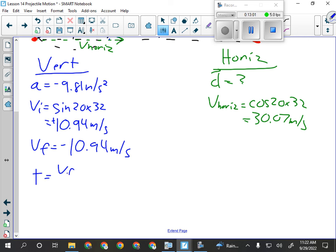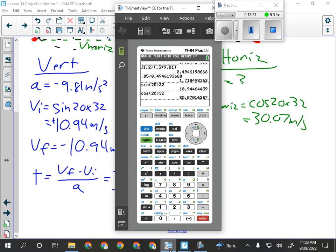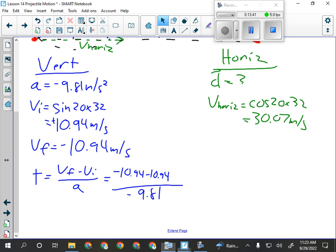So, the time is going to be Vf minus Vi over A, just manipulating our grade 10 science formula. So, that's going to be negative 10.94 minus 10.94 divided by negative 9.81. So, I'm just going to multiply that by 2, and then dividing by 9.81, it's the same deal. So, the car is going to be in the air for 2.23 seconds. That's the flight time of the car.